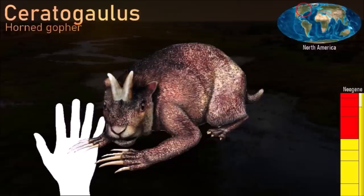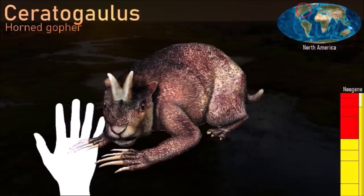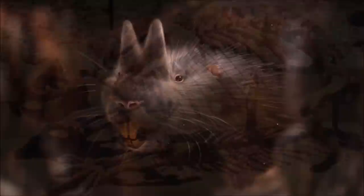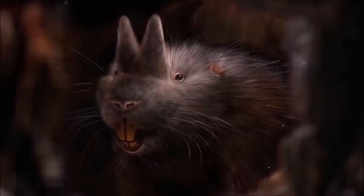Ceratogaulus was a burrowing rodent distinguished by a pair of straight horns on its nose. It was roughly the size of a modern marmot but more closely resembled a gopher, with its strong forelimbs equipped with huge claws. The role of the horns has been much debated: it has been suggested that they were used for digging, but they were not in the correct position. Both males and females had horns, so they are unlikely to have been used for display during courtship. It is now thought that the horns were used as defensive weapons when the animal was out in the open, away from the safety of its burrow.